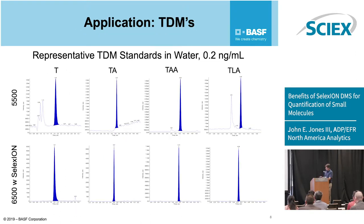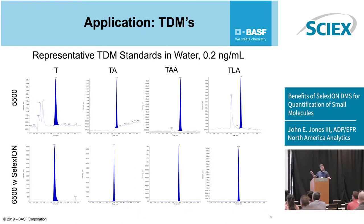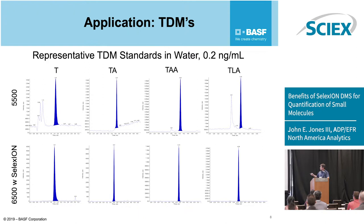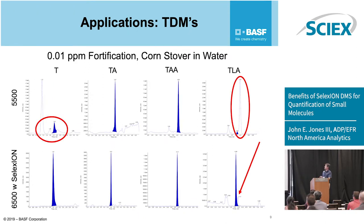Here's a representative chromatogram. This is just a 0.2 nanogram per mL standard. The top is a 5500 without SELEXION and the bottom is the 6500 with SELEXION. At the time we were evaluating which matrices would need SELEXION. We had one 6500 with SELEXION and multiple 5500s. Here's our 0.01 ppm fortification in corn stover in water. You can see there's a lot of chromatographic interference and some baseline drift without SELEXION, but with SELEXION it's greatly diminished — it's a much cleaner sample.